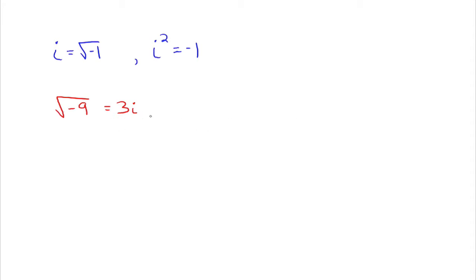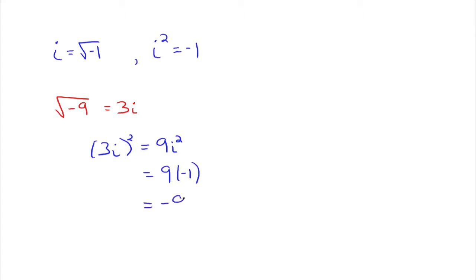The square root of negative 9 is 3i because if you take 3i and square it, you get 9i squared. And i squared is the same thing as negative 1, so this is the same thing as negative 1 times 9, which is just negative 9. That's the whole point of taking the square root — what number can you square to get the radicand? In this case, what number can you square to give you negative 9? That number is 3i, because 3i squared is the same thing as negative 9.